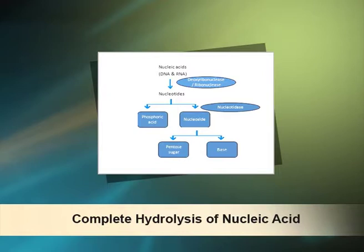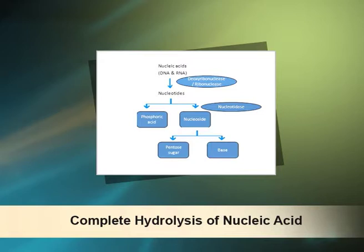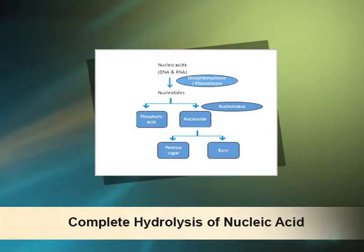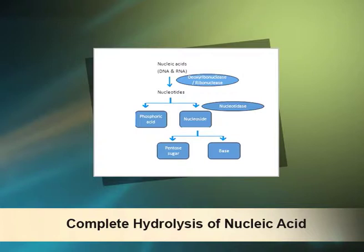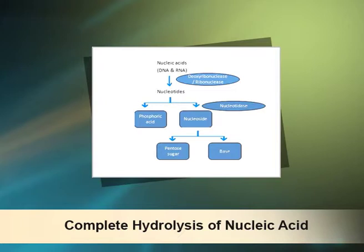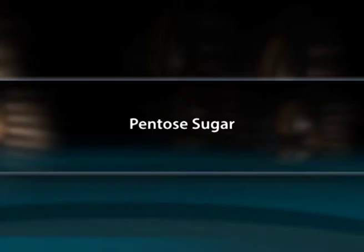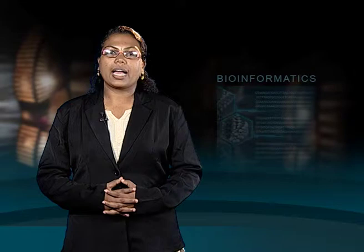The sequence of bases uniquely characterizes a nucleic acid and represents a form of linear information. Nucleotides are the monomeric units of nucleic acids, hydrolyzed to nucleotides by deoxyribonuclease or ribonuclease enzyme activity. Each nucleotide is composed of phosphoric acid and a nucleoside, and each nucleoside is composed of a pentose sugar and nitrogen bases. Hydroxyl groups of the pentose, especially at C3 and C5, are involved in forming a 3'-5' phosphodiester bond between adjacent pentose residues, which is an integral part of the structure of nucleic acids.